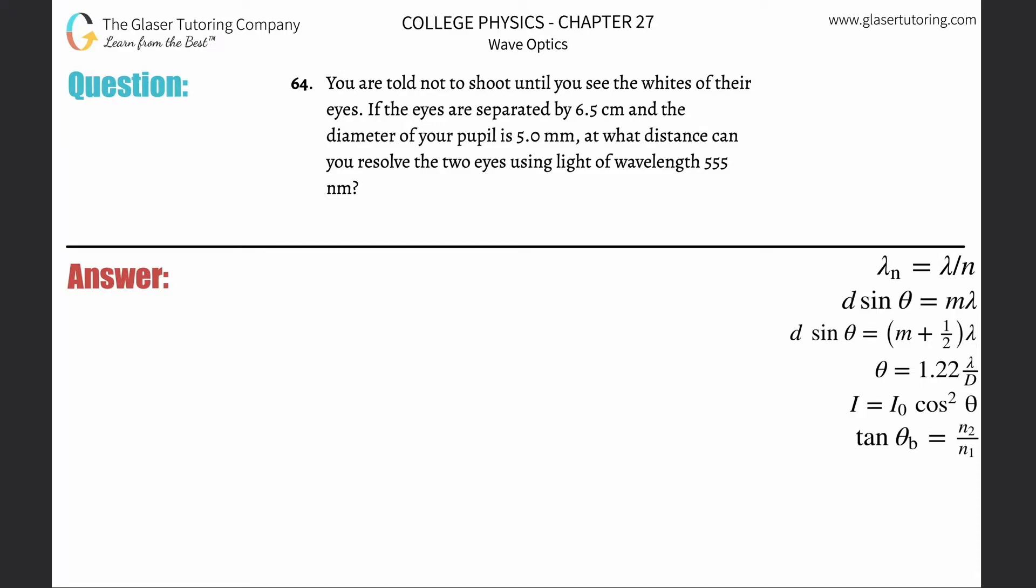Number 64: You are told not to shoot until you see the whites of their eyes. If the eyes are separated by 6.5 centimeters and the diameter of your pupil is five millimeters, at what distance can you resolve the two eyes using light of wavelength 550 nanometers?